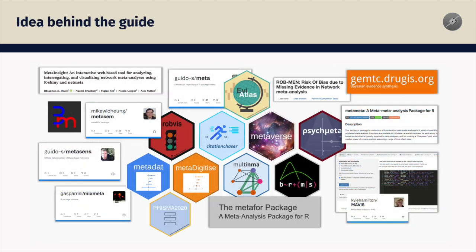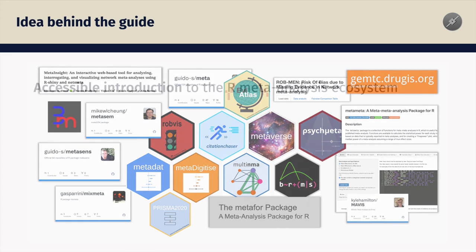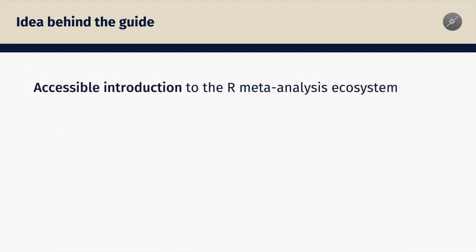Some background. Many would agree that R provides us with the most comprehensive toolbox for research synthesis and meta-analysis that we have to date. There is a huge and ever-increasing number of really amazing R packages out there. However, to use them, we first need a basic proficiency in R. Also, we need to know which packages are actually available for different meta-analytic research questions and how we can use them. The guide tries to bridge this gap by providing a broadly accessible introduction to the R meta-analysis ecosystem.